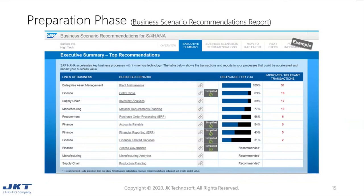For the preparation phase, here is an example of the business scenario recommendation report, where all line-of-business solutions and corresponding business scenarios are listed. There is also a business relevancy percentage efficacy, which helps the customer in deciding the appropriate line-of-business solution. Through this report, we can find the business processes that could be accelerated and could have impact on your business value.